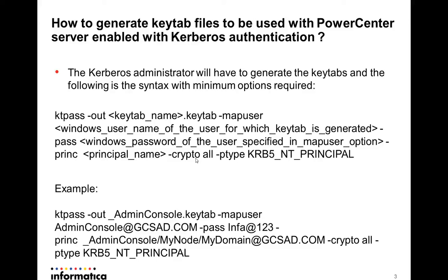The 'ptype' is the principal type, and as all these are Kerberos 5 service principals, the type would be KRB5-NT-PRINCIPAL. For example, in the 'out' parameter I have specified the keytab file name as _adminconsole.keytab. The 'mapuser' is adminconsole@realm, where the realm is gcacd.com. The password is for this adminconsole Active Directory user, and the principal would be _adminconsole/mynode/mydomain@gcacd.com. Crypto is 'all' and ptype is KRB5-NT-PRINCIPAL. This will generate the keytab file and store the keys in it.